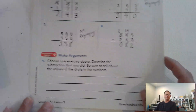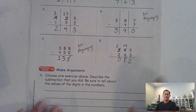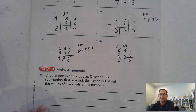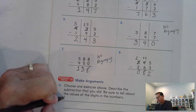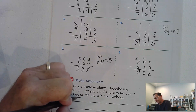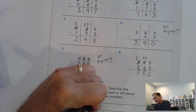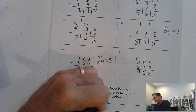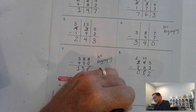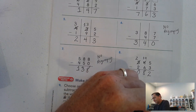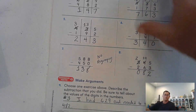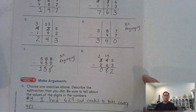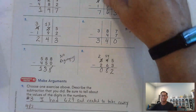Choose one exercise above, describe the subtraction that you did, and be sure to tell about the values of the digits in the numbers. You can choose problems three through eight. I'm going to go ahead and choose number three and explain how I solved it.